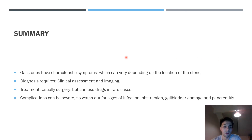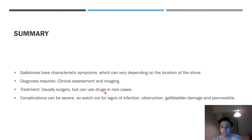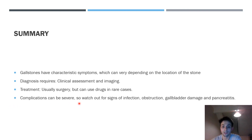In summary, gallstones have characteristic symptoms that vary depending on where the stone is lodged. Diagnosis requires clinical assessment and imaging — particularly ultrasound and MRCP. Treatment is usually surgical, though supportive care and occasionally medications are also used. Serious complications include infection, obstruction, gallbladder damage, and pancreatitis — watch out for these, as they can be very severe if left untreated. Thank you very much for watching — leave a like if you found this useful and let me know what I can improve.